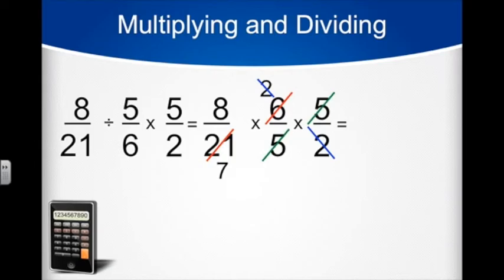Now we can identify the factors that are left. 8 in the numerator and 7 in the denominator. We can see now that our answer is 8 7ths, which equals 1 and 1 7th.